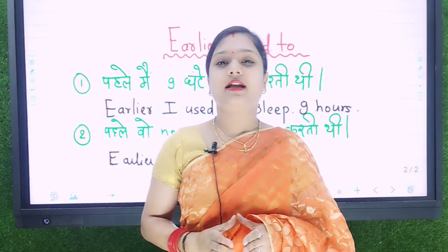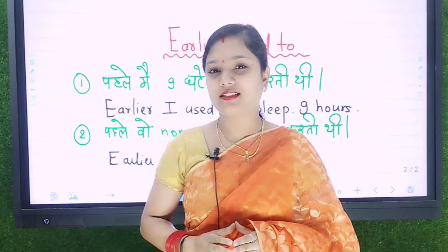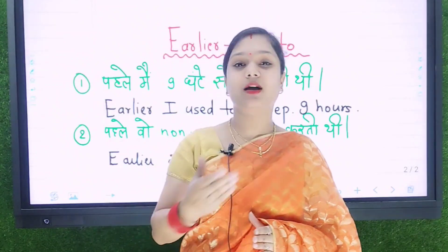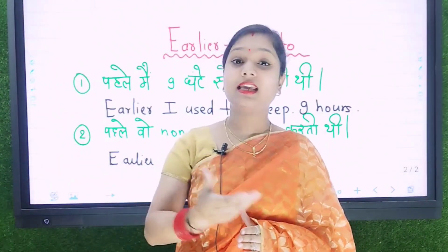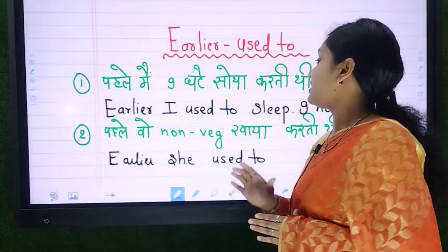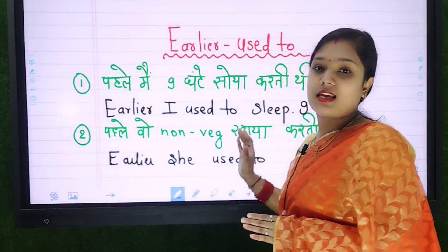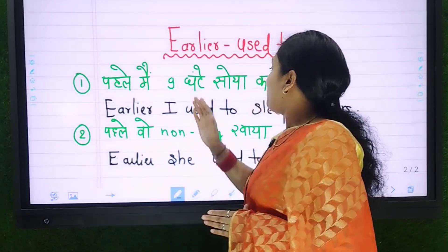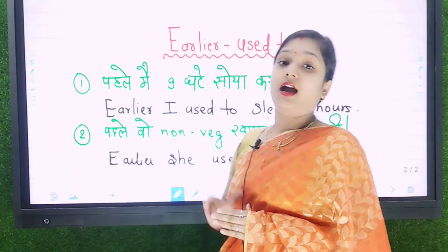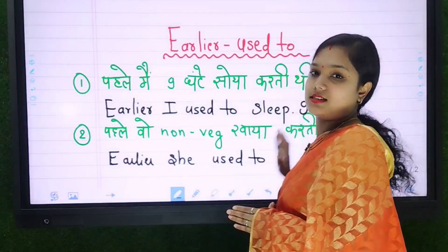पहले मैं इस्कूल में पढ़ाया करती थी। पहले मैं बच्चों को बहुत डांटा करती थी। इस तरह के sentences के लिए, पहले हम ऐसा किया करते थे — इसके लिए use करते हैं phrasal verb 'earlier used to'. जैसे कि पहला sentence देखिए: पहले मैं नौ घंटे सोया करती थी — Earlier, I used to sleep nine hours.